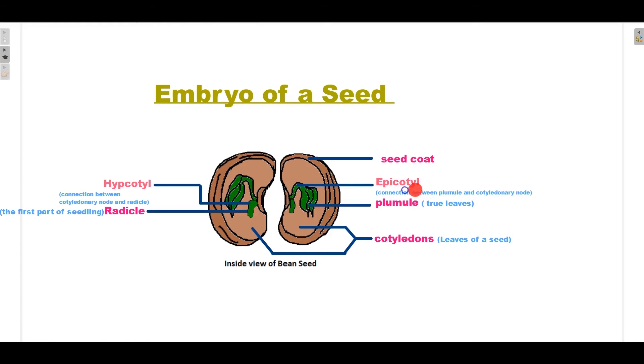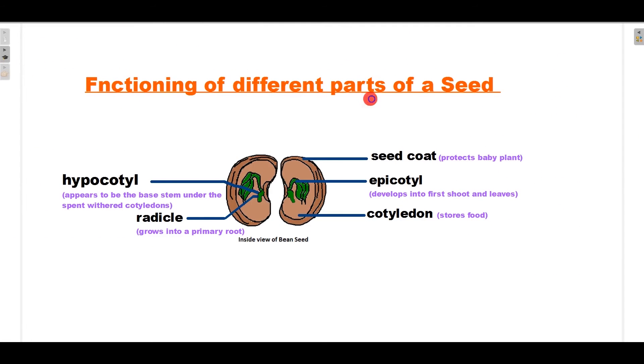Epicotyl is the connection between cotyledon and the plumule. This is about the embryo of a seed. Next, functioning of different parts of a seed.